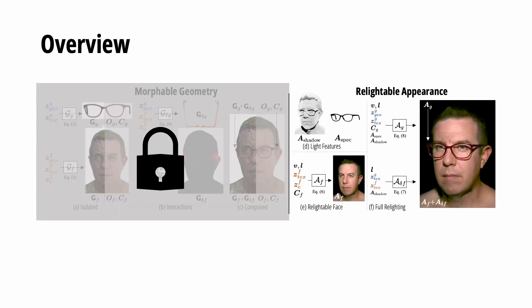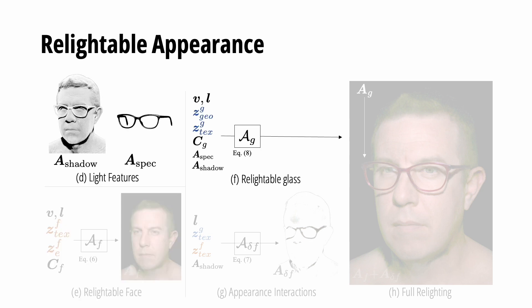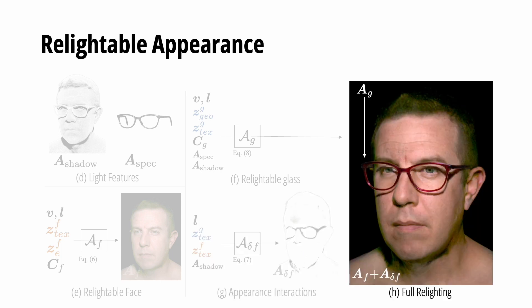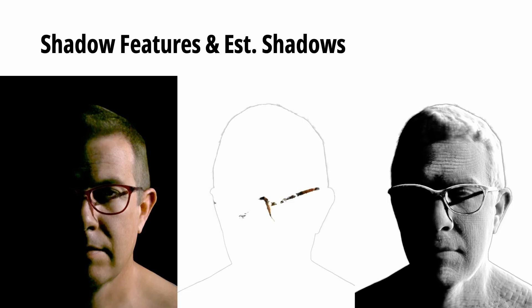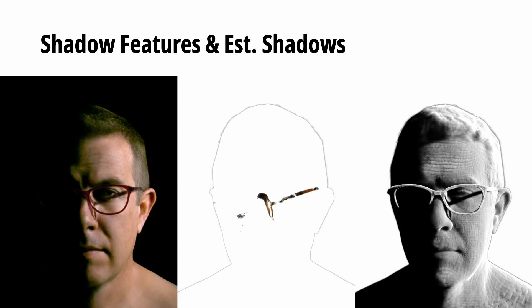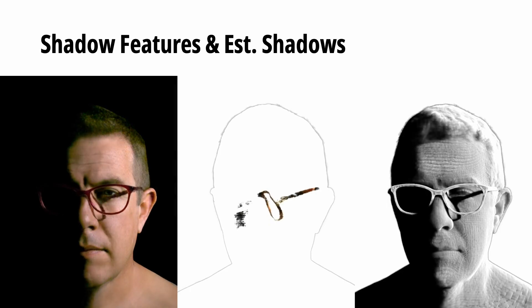After training the morphable geometry, we freeze the geometry and motion model and focus on modeling the Relightable Appearance. We have three major components: Relightable Face Appearance, Relightable Eyeglasses Appearance, and the Appearance Interaction Layer, which models the shadows. These three components compose together to generate the full relighting output. You can see how our model realistically reproduces the shadow on face from the eyeglasses.